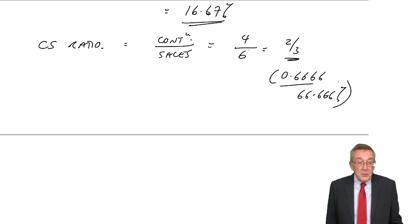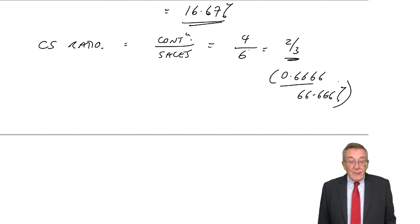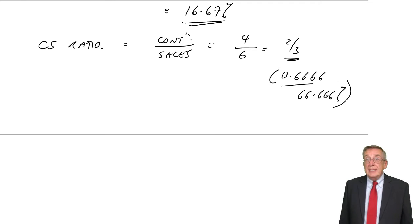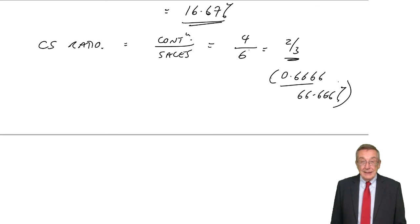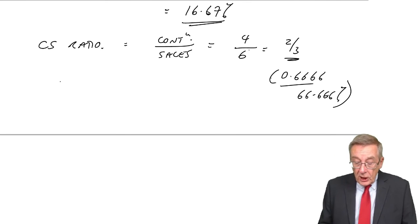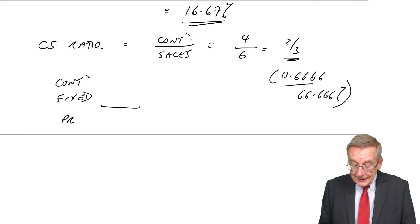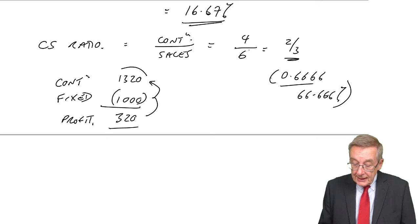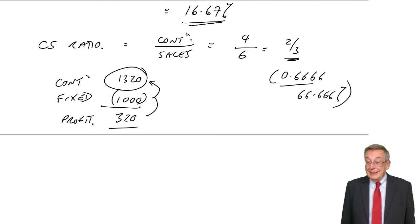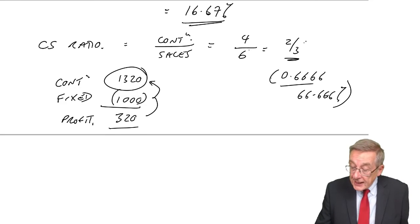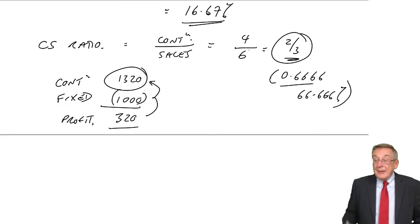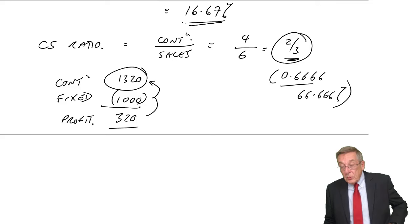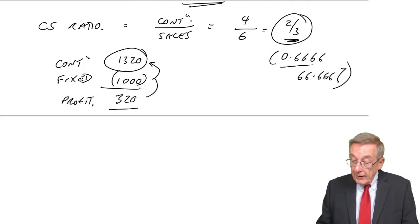And a use we can put that to, look at example 3. What revenue is needed to generate a target profit of $3,200? Well, think back to what we did earlier. We know always that the contribution less the fixed costs gives us the profit. I want a profit of $3,200. The fixed costs are $1,000. And so, the contribution is $13,200. So we need a contribution of $13,200. But I know the CS ratio is two-thirds. So I know that contribution will always be two-thirds of the revenue. So I can write down the revenue almost immediately.